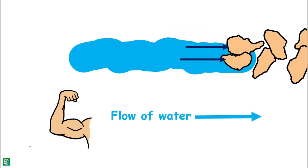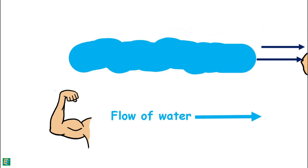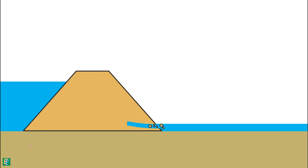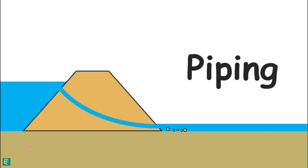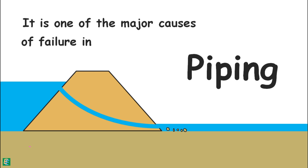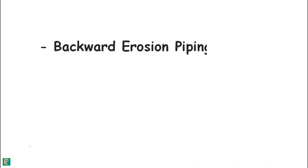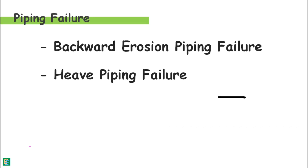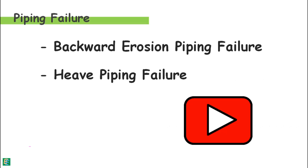If the exerted force is strong enough, it may displace soil particles and carry them away with the flowing water. This creates pipe-like openings in the body of the dam through which water can flow rapidly. This phenomenon is called piping, and it is one of the major causes of failure in earth dams.